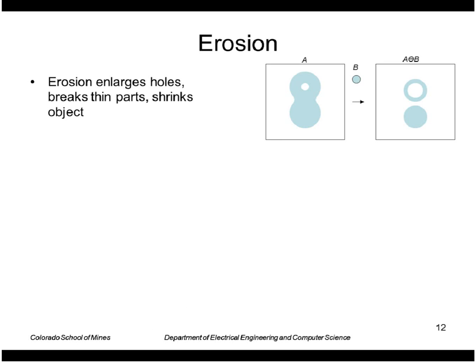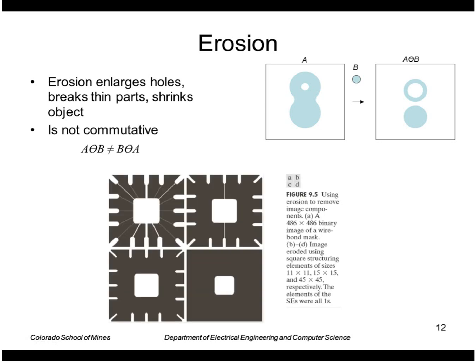In general we can think of erosion as shrinking a region. It makes a region smaller, makes holes bigger, and makes any thin parts go away. It's not commutative. Here's an example on an image. Here's my original image. Here is the result of eroding by a structuring element of size 11 by 11. These thin lines are smaller than 11 by 11 so they disappear and everything else shrinks. Using a larger structuring element I even get rid of the thick lines, and with an even larger structuring element I get rid of all this stuff on the outside. It destroys anything smaller than the structuring element.